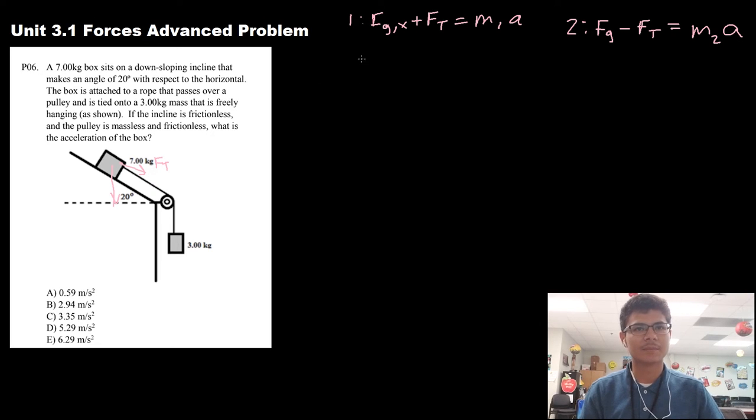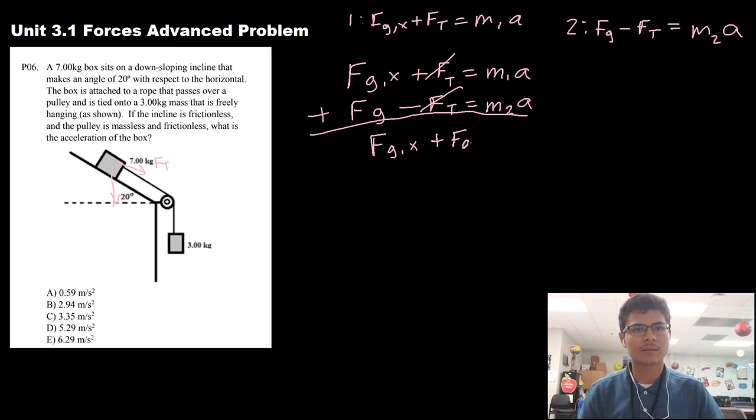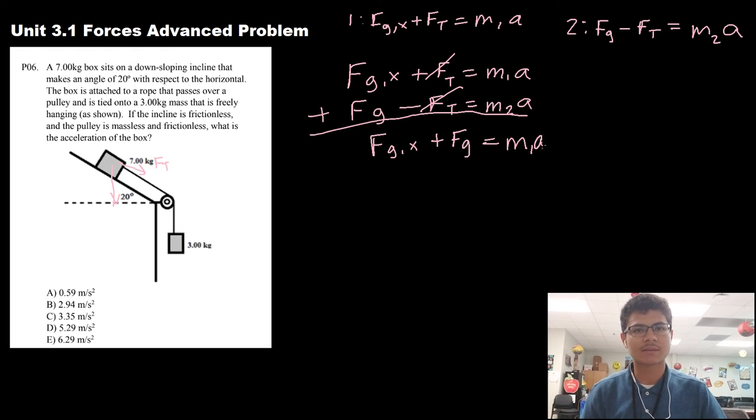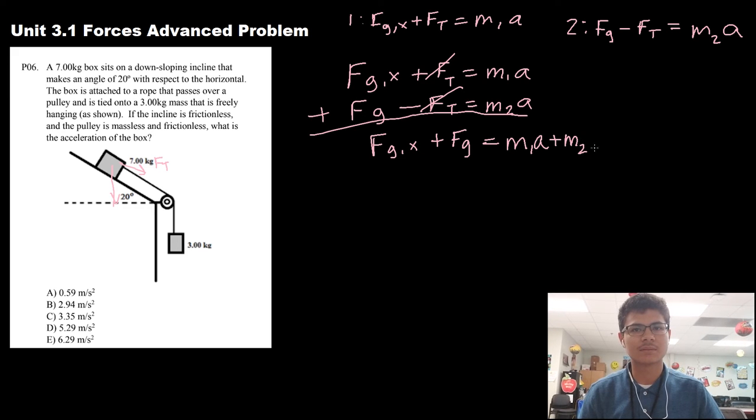Now that we have these two equations, let's add them up. We have fg x plus the force of tension equals mass 1 acceleration, and force of gravity on the second box minus the force of tension equals mass 2 times acceleration. We can add these two equations and we see that the force of tension cancels out. The force of gravity in the x direction of the first box plus the force of gravity on the second box equals mass 1 times acceleration plus mass 2 times acceleration.